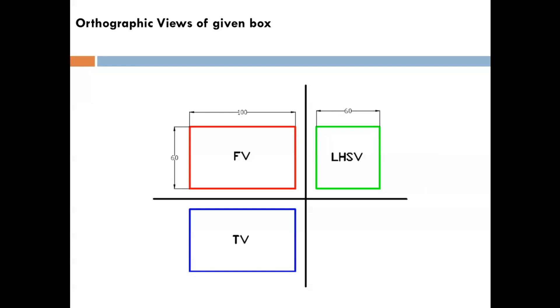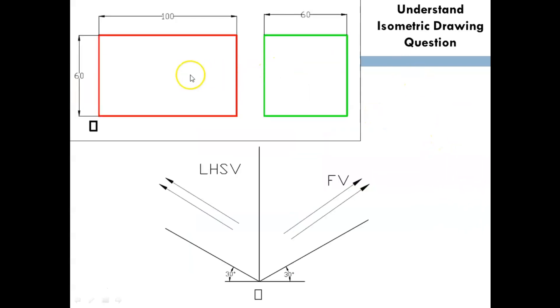When you are dealing with isometric problems, they will not give you all three views but minimum two views. In this problem, you can see they have given two views only: front view and LHSV. The dimensions are given, but they will mention the origin.